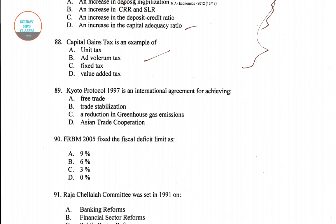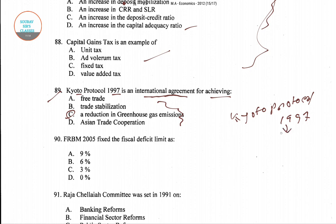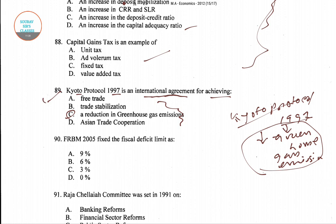Question number 89: The Kyoto Protocol 1997 is an international agreement for achieving — four options are given. Option C is the right answer — the Kyoto Protocol of 1997 was an international agreement for the reduction in greenhouse gas emissions. So for question number 89, option C is the right answer.